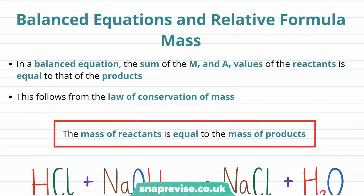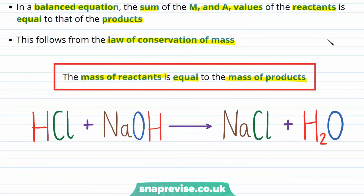Now we know about relative atomic and formula masses, how can we use them? In a balanced equation, the sum of the relative formula masses, Mr, and relative atomic masses, Ar, for the reactants is equal to that of the products. This follows directly from the law of conservation of mass, which says that the mass of the reactants is equal to the mass of the products — no atoms can ever be created or destroyed in a chemical reaction. Let's check that this is true by working through an example.